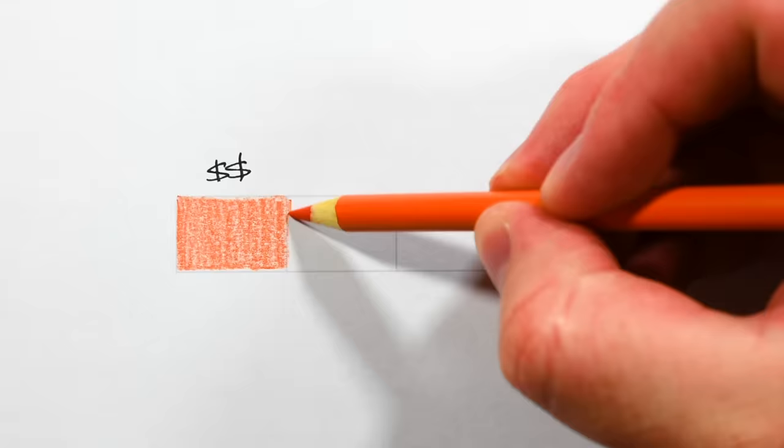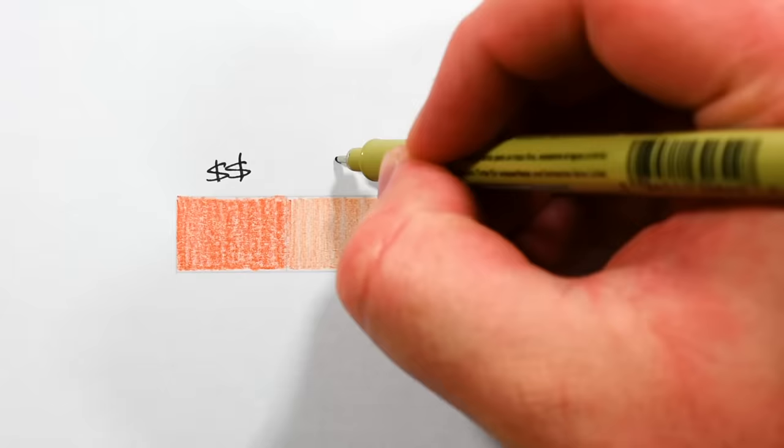For comparison this is a more expensive Prismacolor pencil and with just one layer I'm able to get some pretty vibrant color. This cheaper Crayola colored pencil looks dull by comparison but that's because I just shade it up and down.